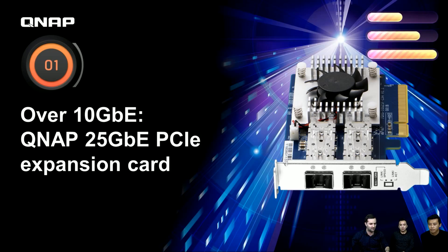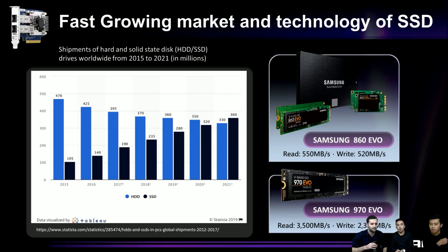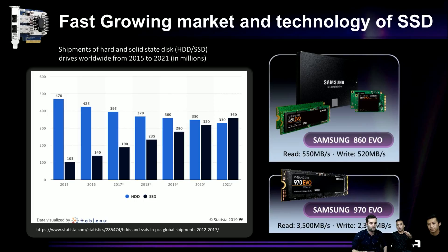In this slide we are going to introduce the trend of HDD and SSD. From this chart you can see the blue line is HDD market share from 2015, and the black one is the SSD market share. You can see the HDD is slowly going down while the SSD is faster going up, and we expect that in 2021 the SSD market share will go over HDD.